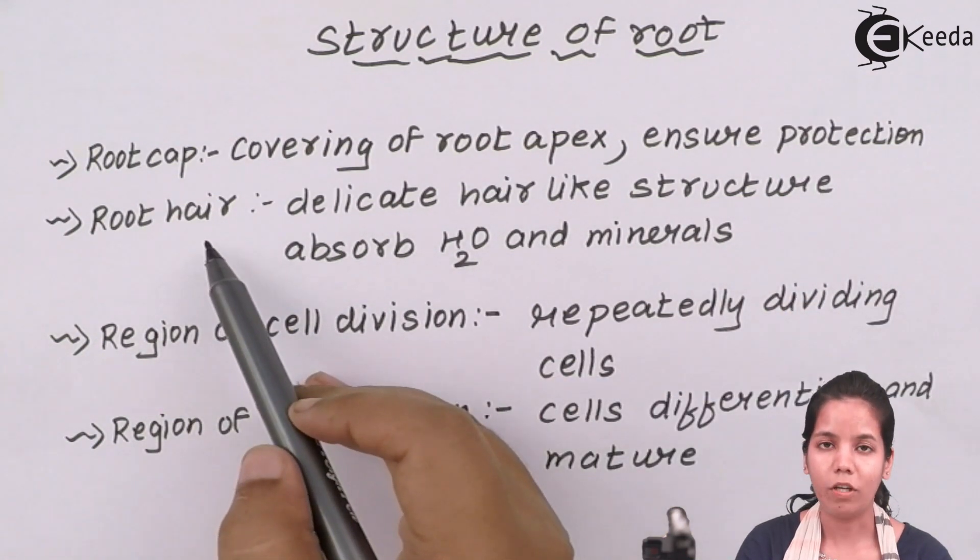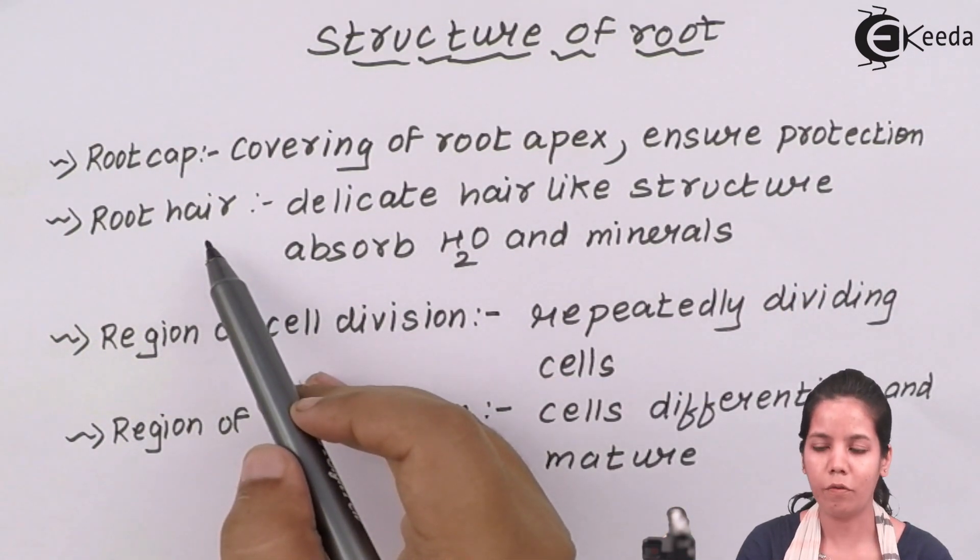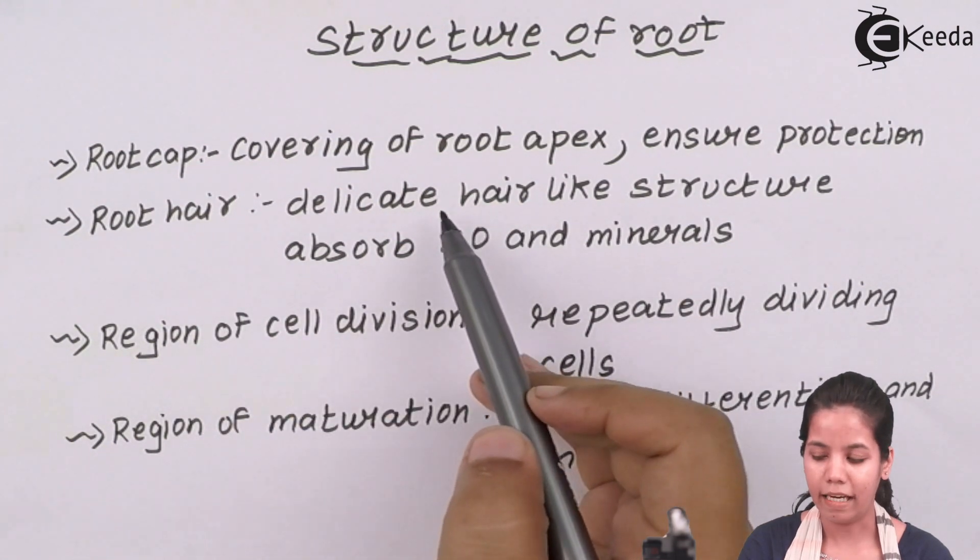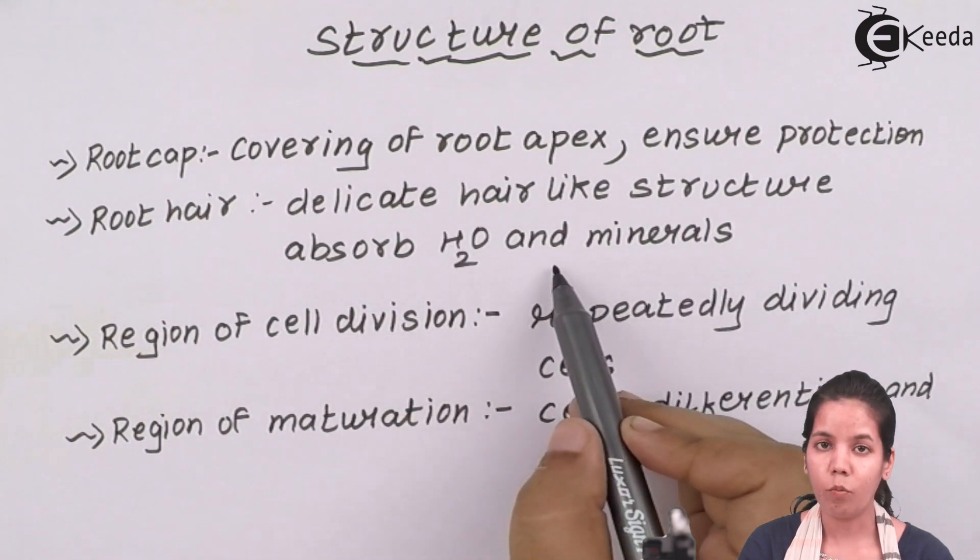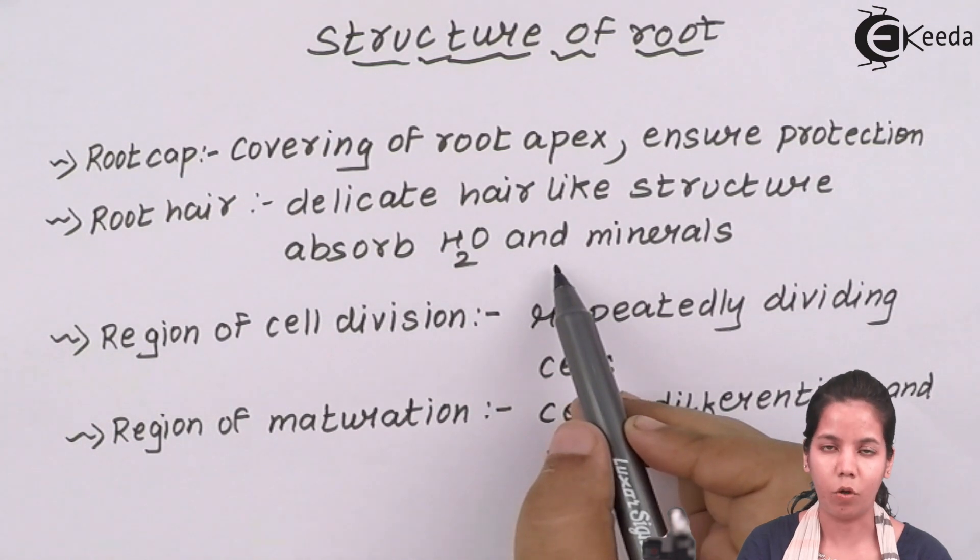Next is your region of root hairs or region of absorption. Now they are thin delicate cell-like structures that absorb water and minerals from the soil.